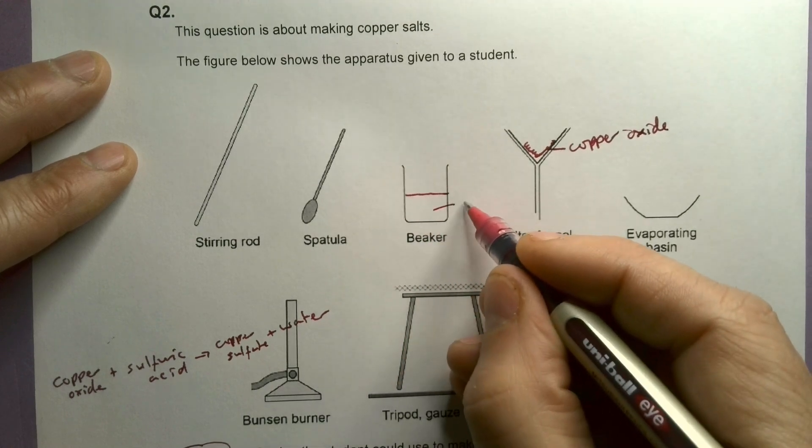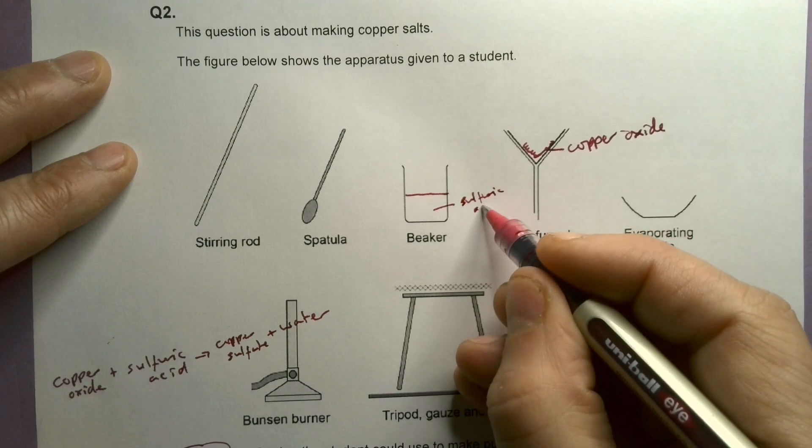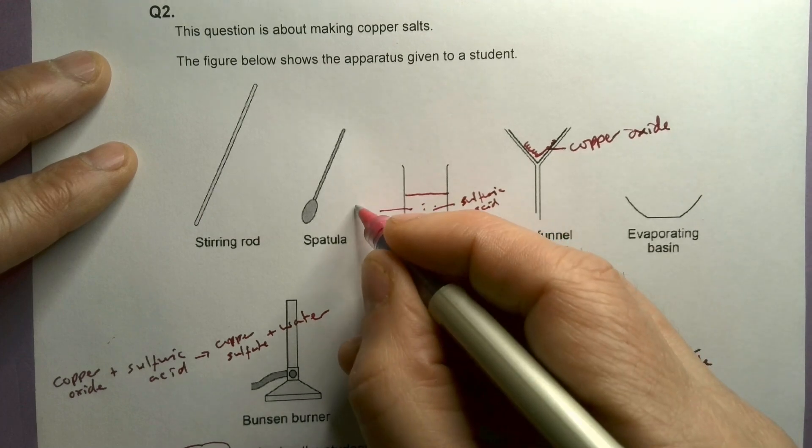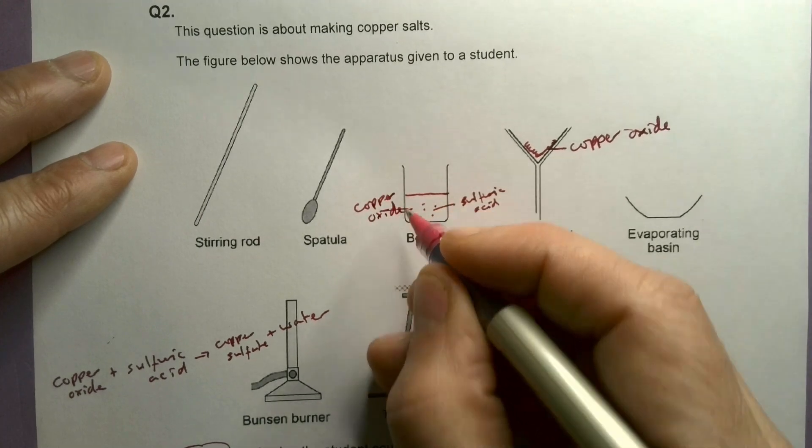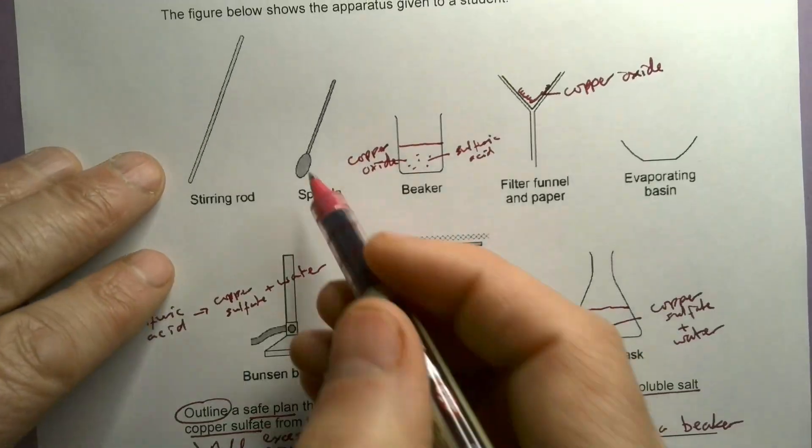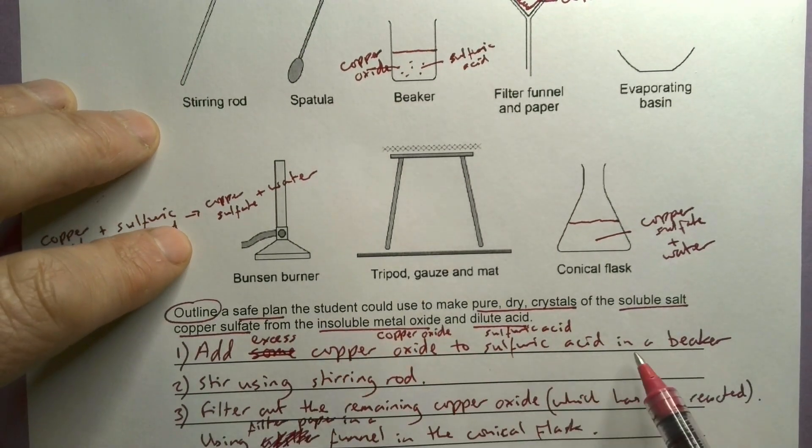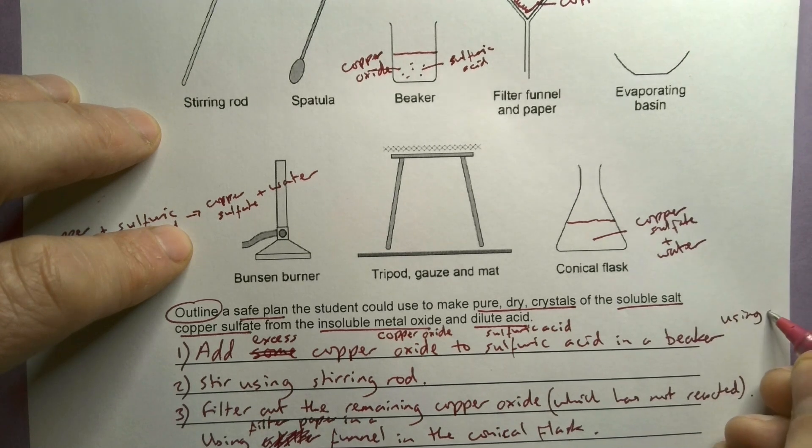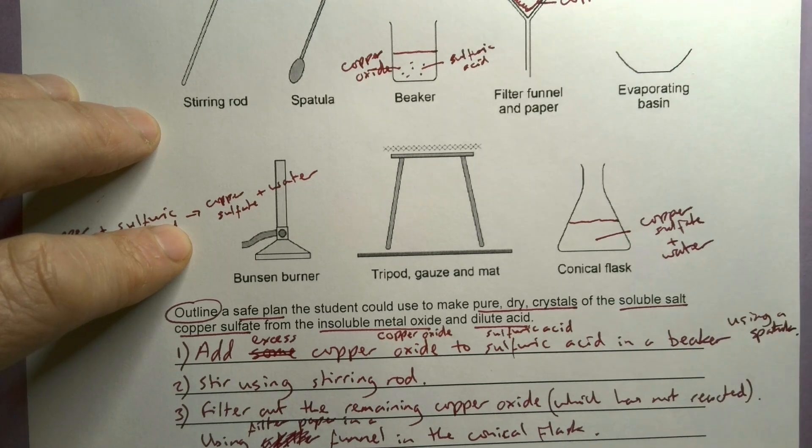Okay, so I'm sort of thinking what I was doing here. So that was the sulphuric acid. And then I had some copper oxide in there as well. I might have said here actually, the spatula, I haven't mentioned that how I add excess copper oxide to sulphuric acid in a beaker using a spatula. Using a spatula. Okay, so I'm just going to add that.